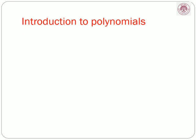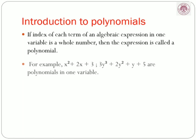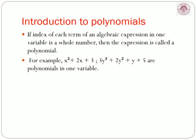Now let us look at polynomials. What is a polynomial? If the index of each term of an algebraic expression in one variable is a whole number, then the expression is called a polynomial. Whole numbers means 0, 1, 2, 3, 4, etc. For example, x squared plus 2x plus 3 — the variable is x, the index of the variable is 2, which is a whole number. Therefore x squared plus 2x plus 3 is a polynomial in one variable.